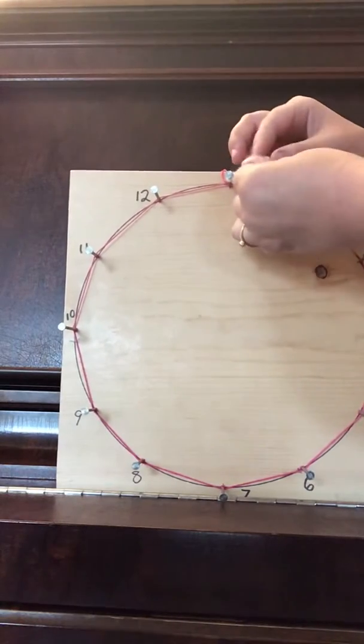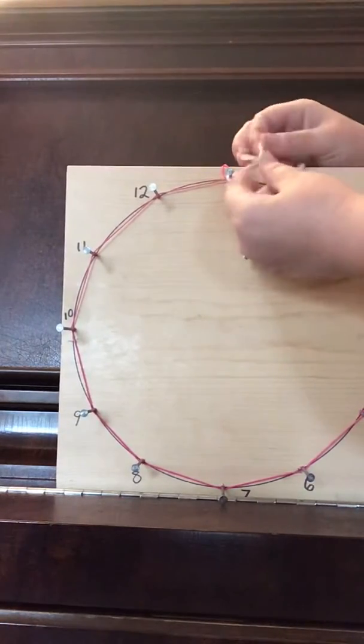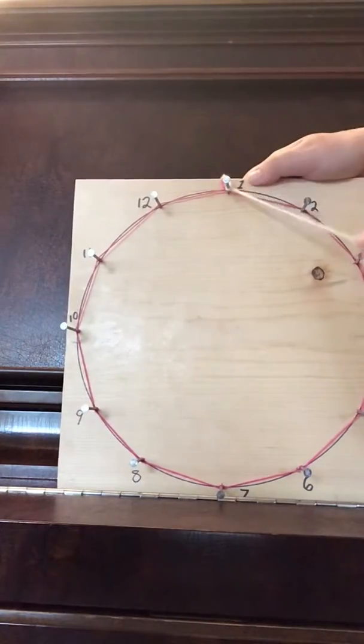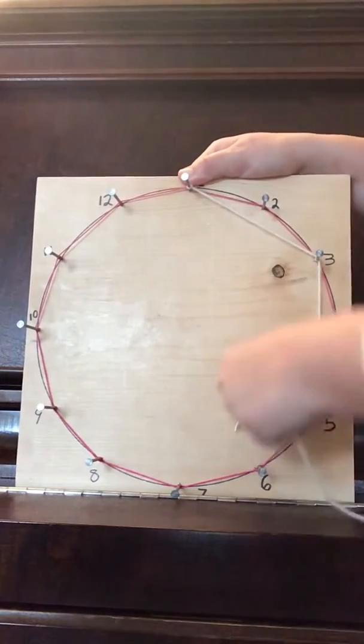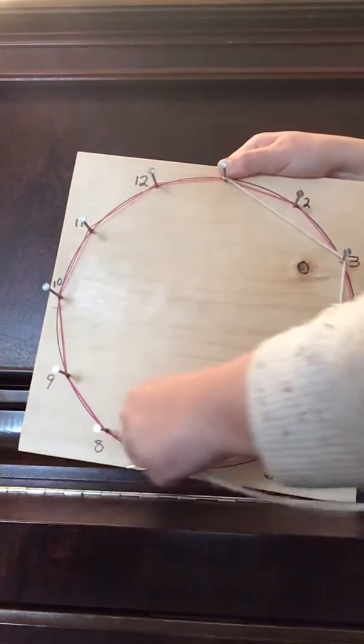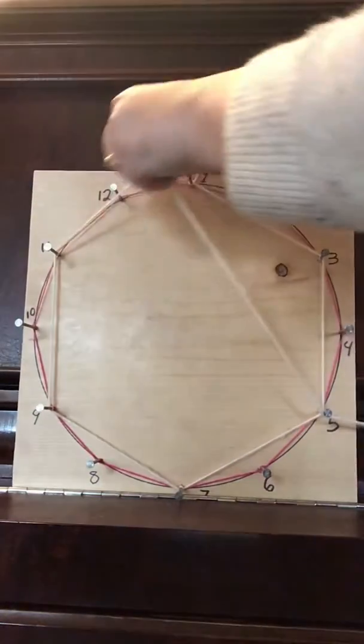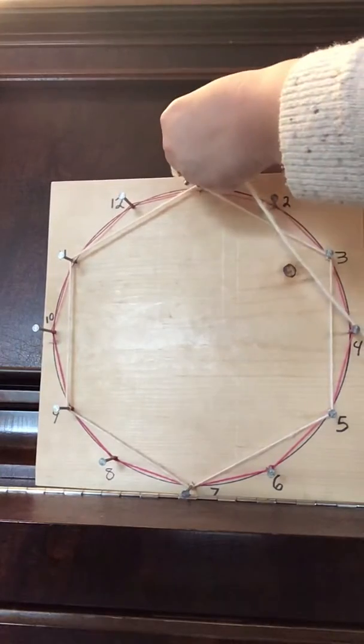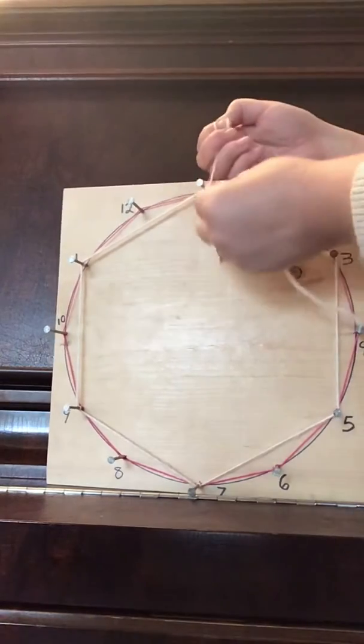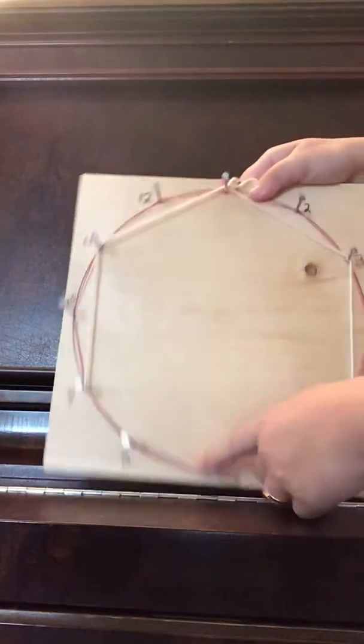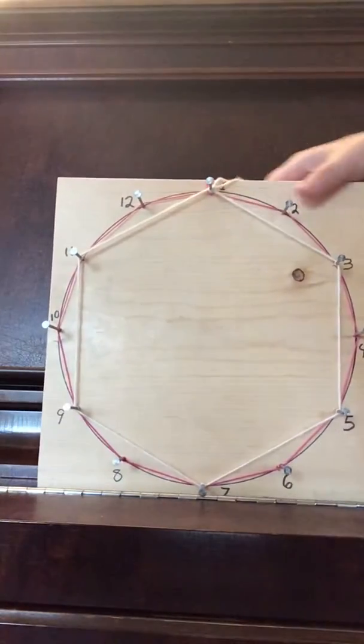Now this time you're going to skip every other nail. Okay. That means that you're going to go from one to three, to five and so on all the way around. So that means that I'm not going to go to two. I'm going to skip right to three, skip to five, skip to seven, skip to nine, skip to 11, and then come back to one where you can tie it, wrap it once before you tie it and wrap that up. Okay. So make sure you push it down towards the wood so it's really close to the surface and that's the start of our string project.